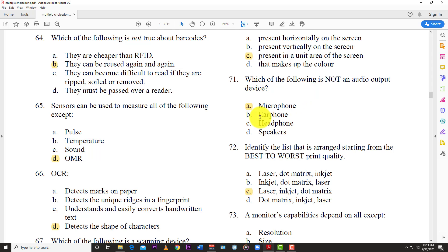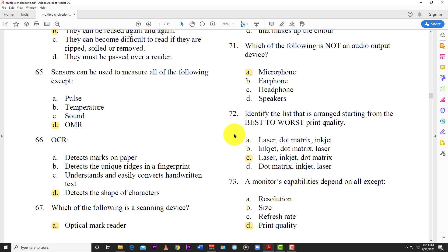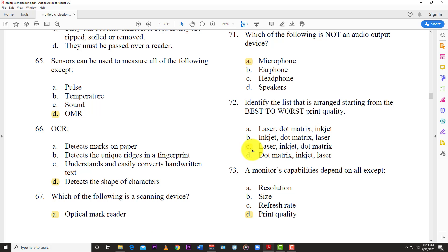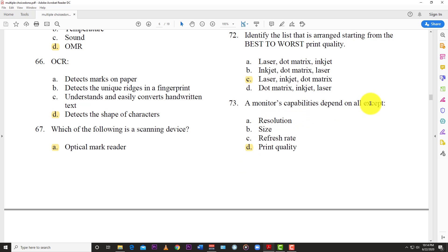Number 71: Which of the following is not an audio output device? And of course the answer is A, a microphone is an input, audio input device. Number 72: Identify the list that is arranged starting from the best to the worst print quality. So we have it right here. The answer is C. You have the laser, which is the best, nice and crisp. You have the inkjet, which is the normal one people normally use. And then you have the dot matrix. Number 73: A monitor's capabilities depend on all except, and of course the answer here is D, the print quality. The monitor doesn't determine the print quality. The resolution, yes. The size, yes. You have a little 19 inch versus a 36 inch, that's a big difference. Refresh rate, of course. You have the 60 versus the 144 versus whatever. The higher the refresh rate, the smoother it tends to have the image. That's a capability. And of course again, resolution. You have your 1080p monitors, your 720p monitors, your 4K monitors, your 2K monitors, your 8K monitors.